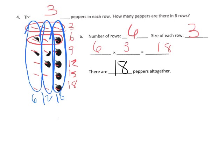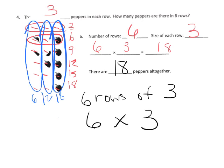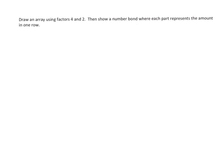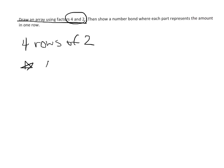In this array we had six rows of three peppers, written as six times three, which equals 18. The last problem says: draw an array using the factors four and two. It doesn't say four has to come first, but students are very likely to do four rows of two, drawing them out like this.